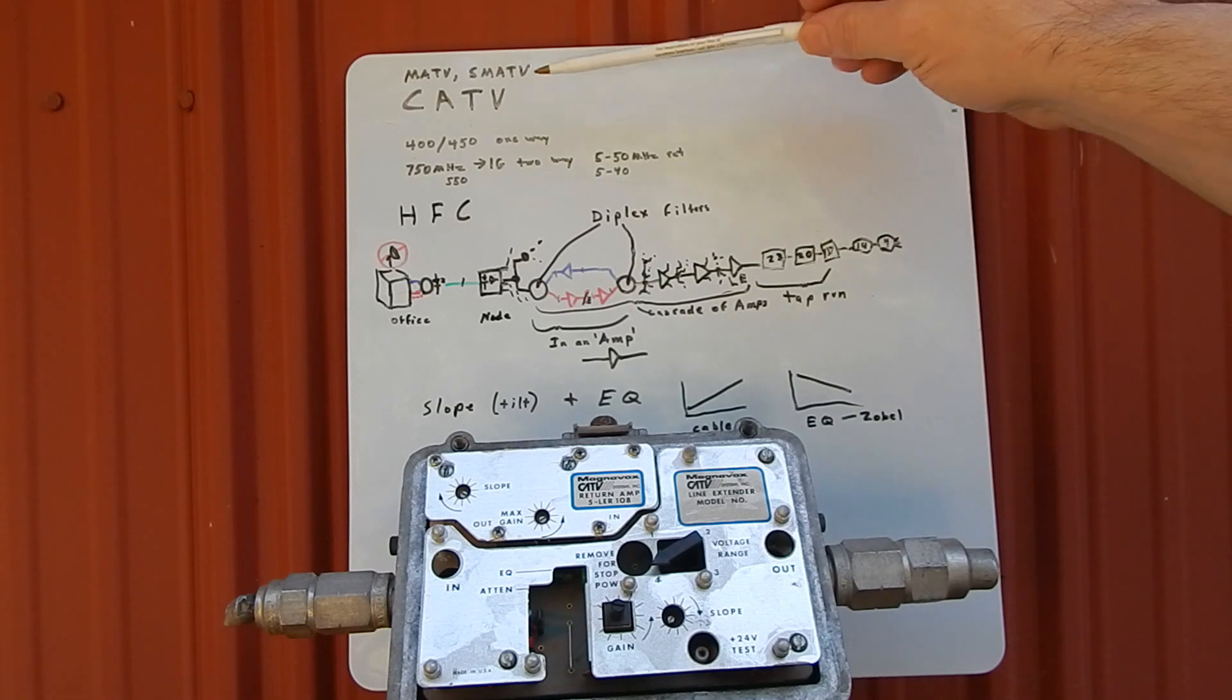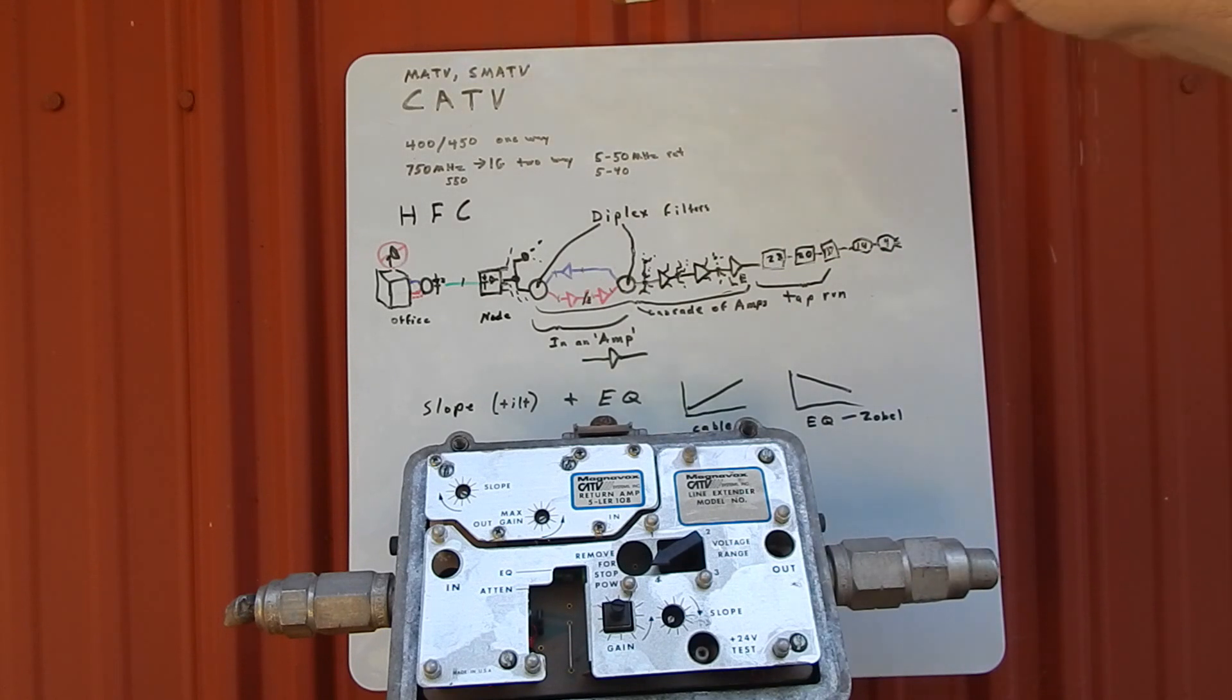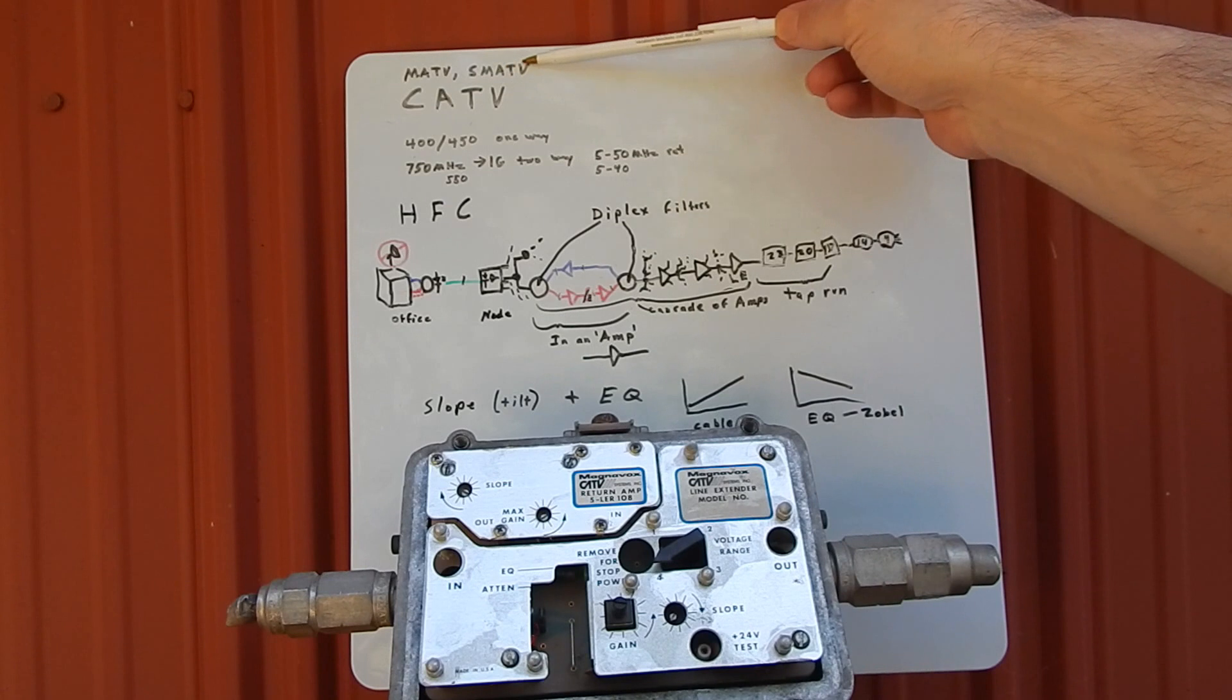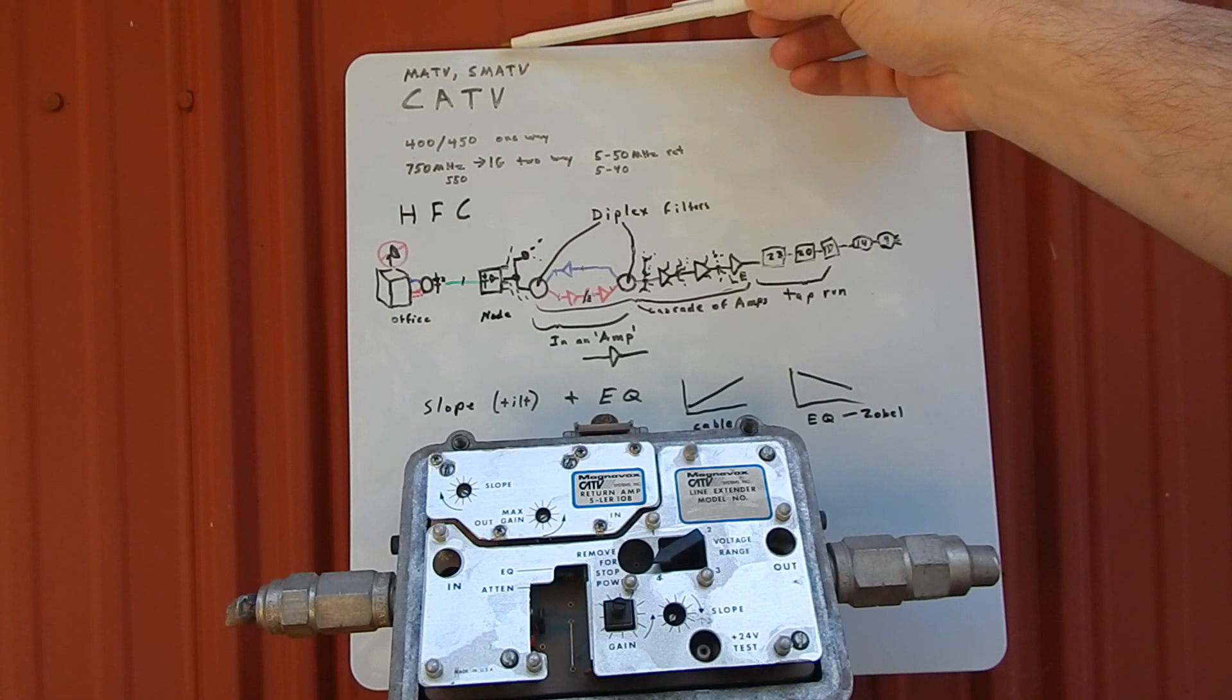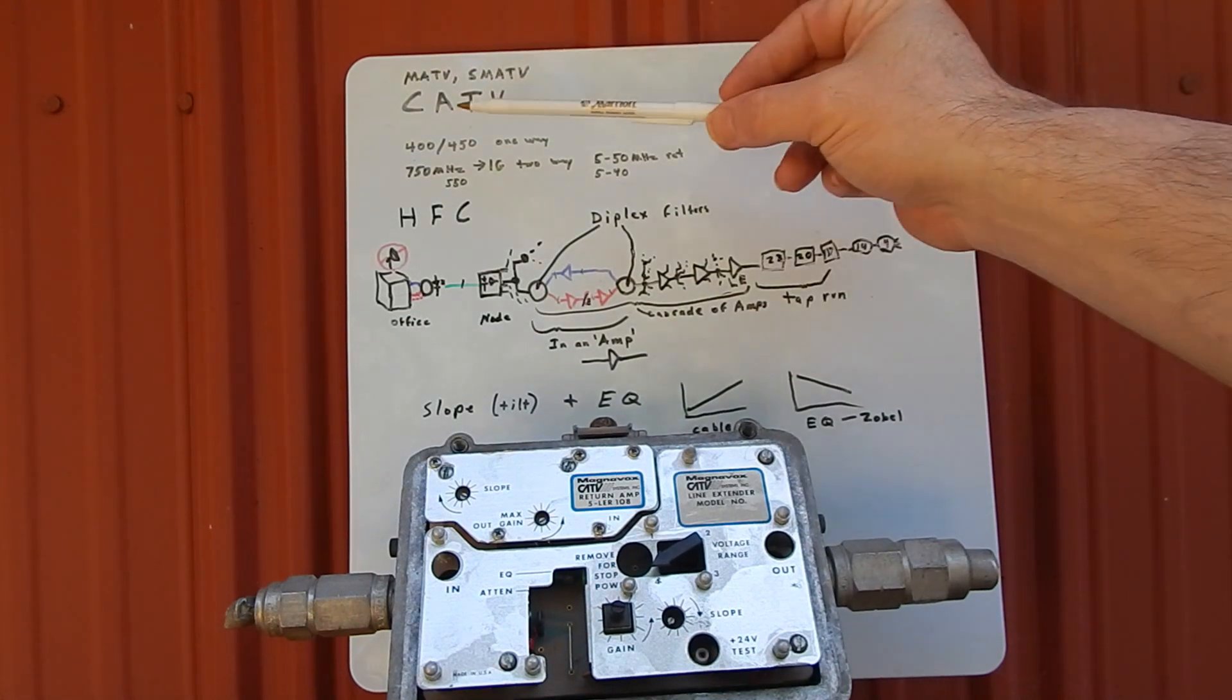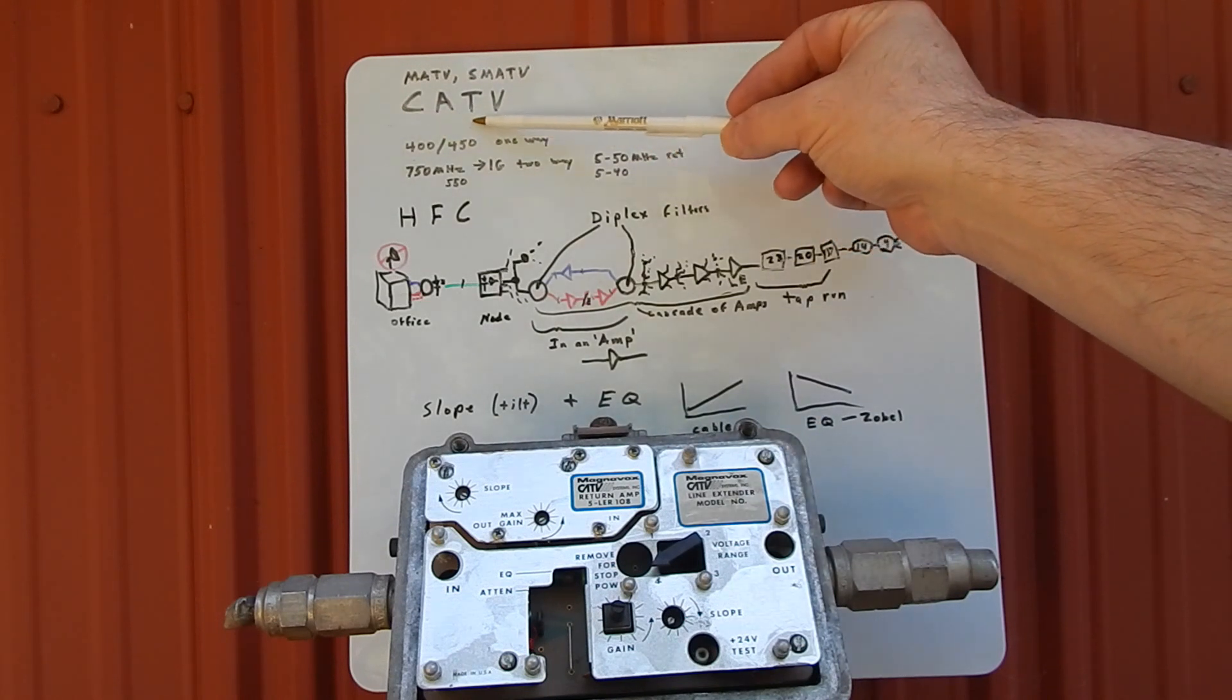I started working on intercom systems and MATV and SMATV systems with a private contractor, and eventually I got hired by a SMATV company. MATV means Master Antenna Television, SMATV is Satellite Master Antenna Television, and CATV means Community Antenna Television.